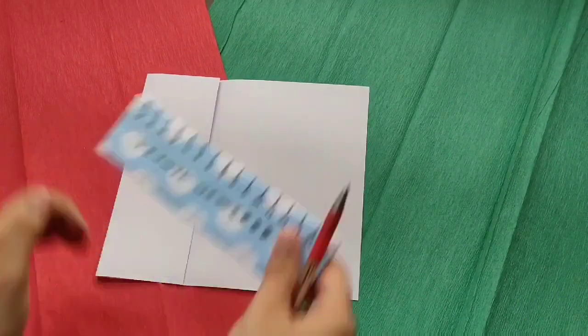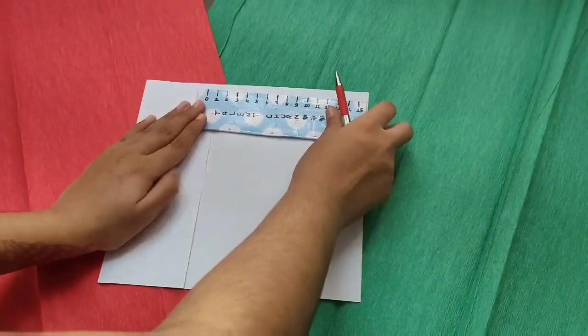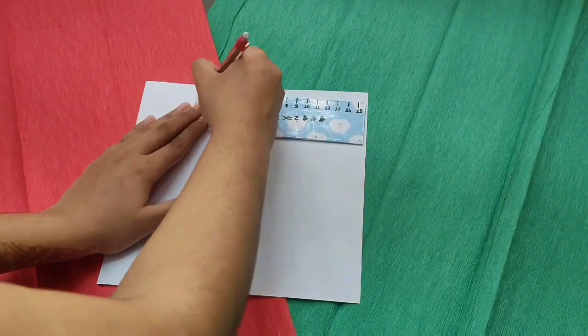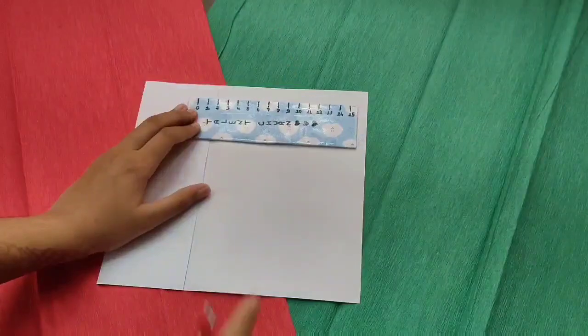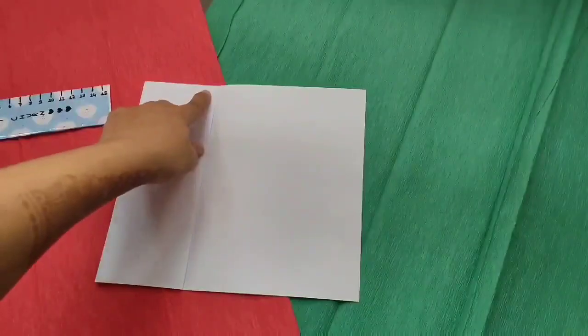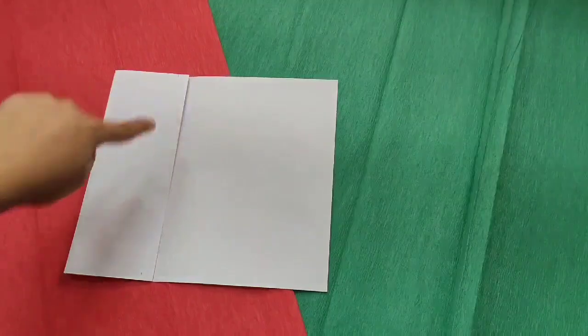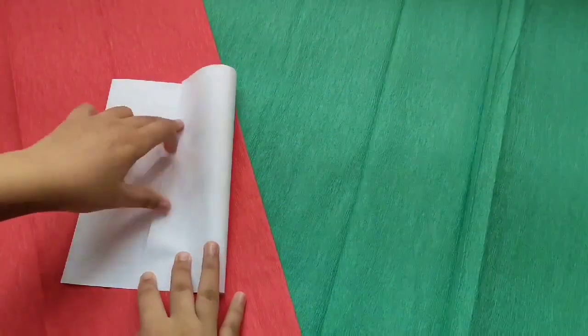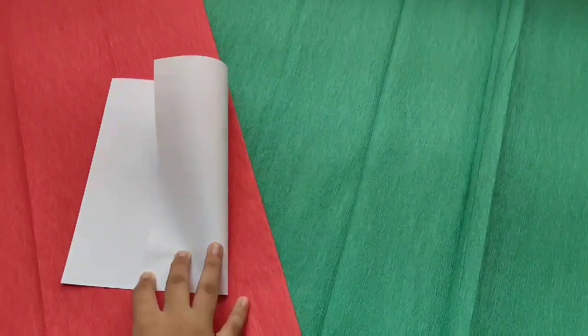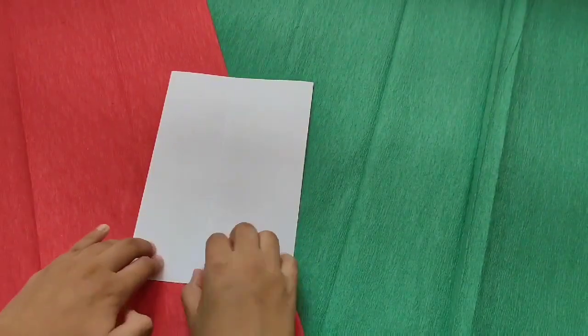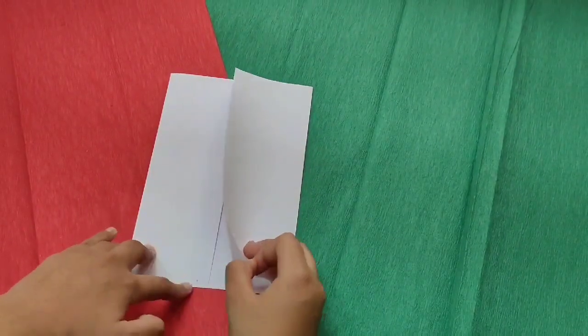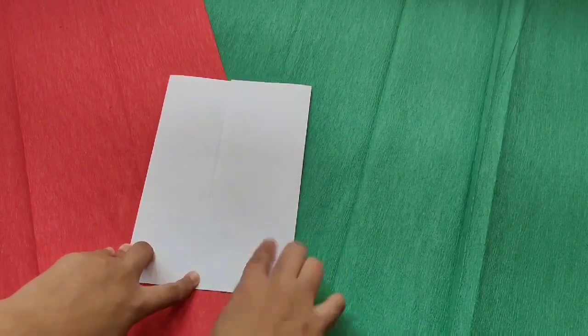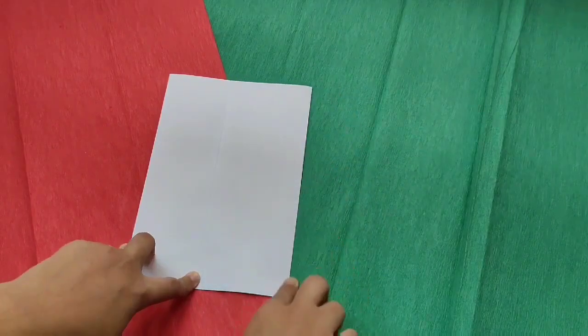Now we are going to measure 1 cm right over here. So it will come over here. So I have measured it here. Now we are going to fold this and place it on our lines and give it a press again. Here I have my line, and here I have placed it and I have given a press over here.